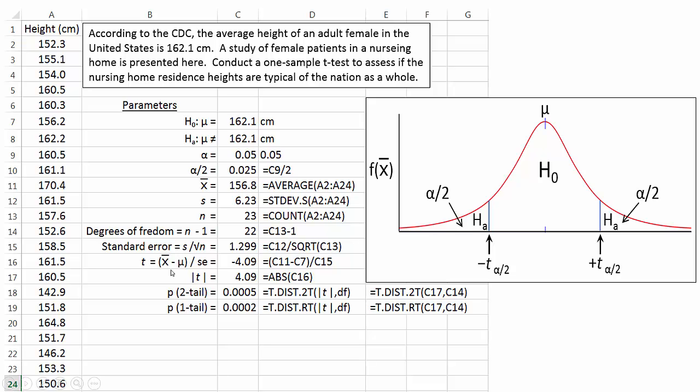Then we're going to calculate t. That is x bar minus mu divided by the standard error. So x bar is in cell C11. The population mean, which is stated in the null hypothesis, is C7 divided by the standard error, which is in cell C15. Notice we got a negative value of t.